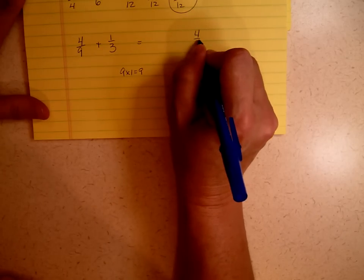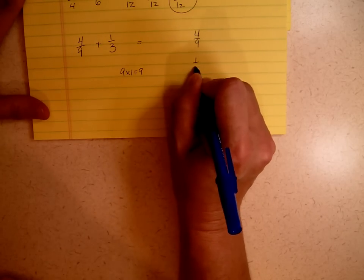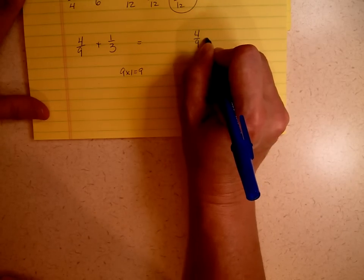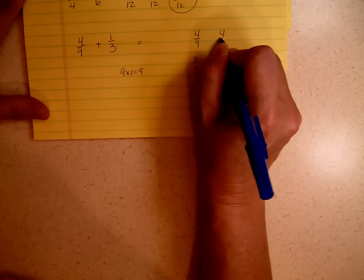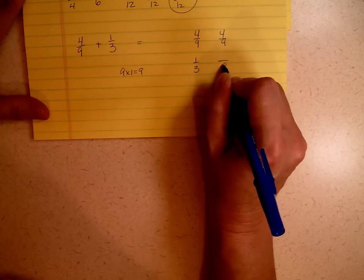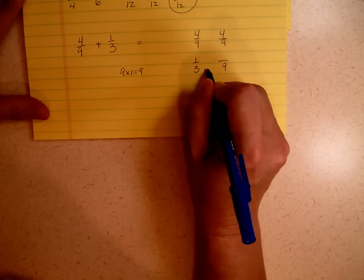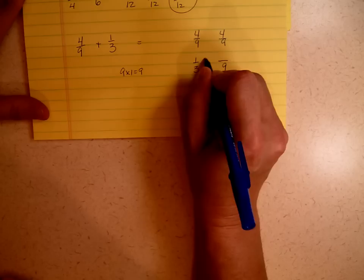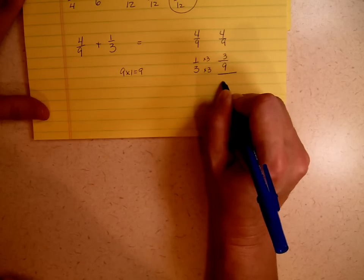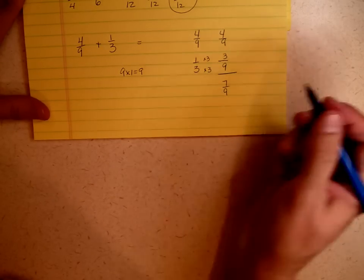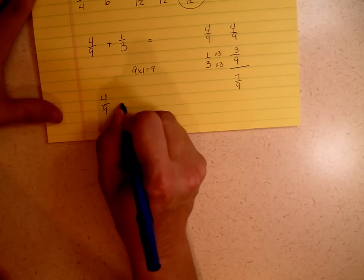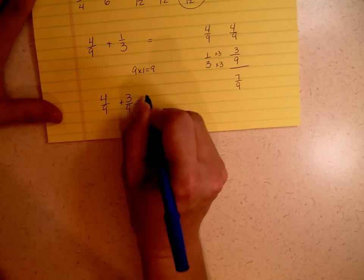And again, you don't have to write it this way. I just prefer to write it this way. It makes it a little easier for me. Four-ninths is four-ninths. One-third, hmm, three times three gives me nine. So one times three is three, which means that's seven-ninths. Four-ninths plus three-ninths is seven-ninths.